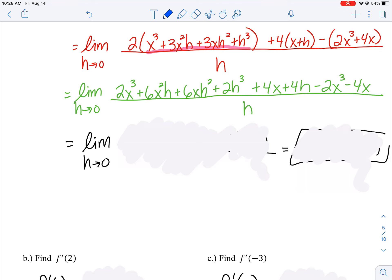Now let's cancel anything without h's. The 2x³ and -2x³ should cancel. The 4x and -4x should cancel. All remaining terms have h's, so I feel good. Since all the remaining terms have h's and none are like terms, I can factor out an h and leave the leftovers.